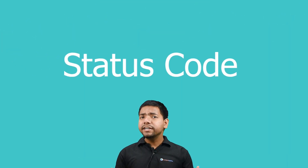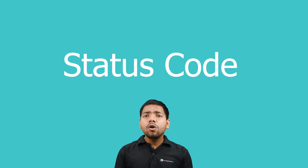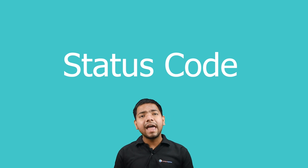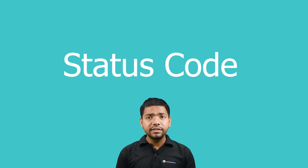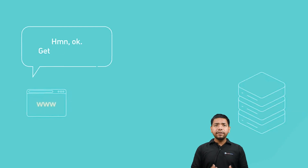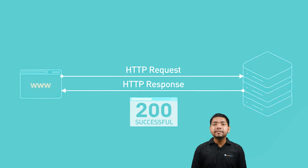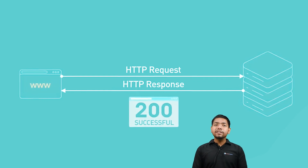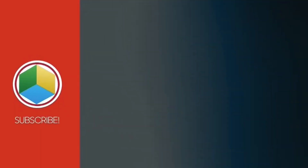Now let's talk about what is a status code. This indicates whether the request was successful, encountered an error, or required further action. Status codes range from 100, which is informational, to 500, which is server error. When the status code indicates 200, it means the response is generated successfully.